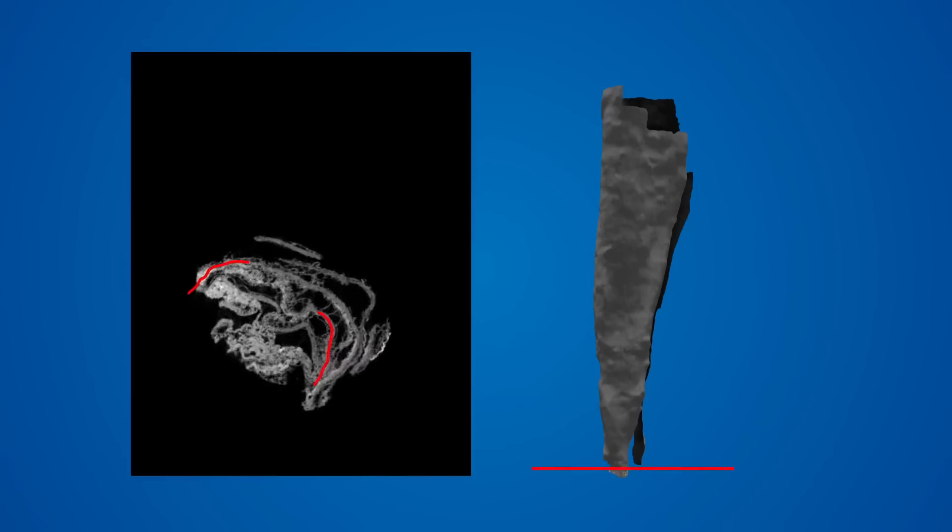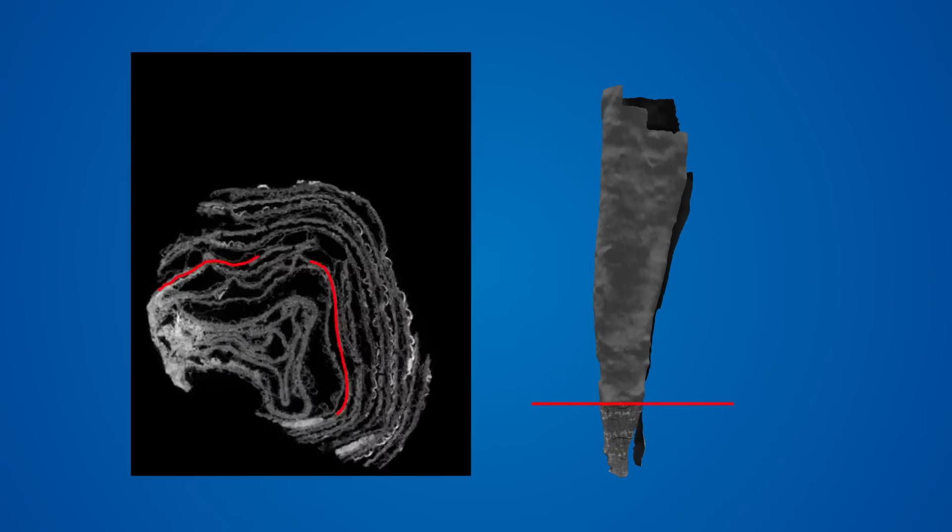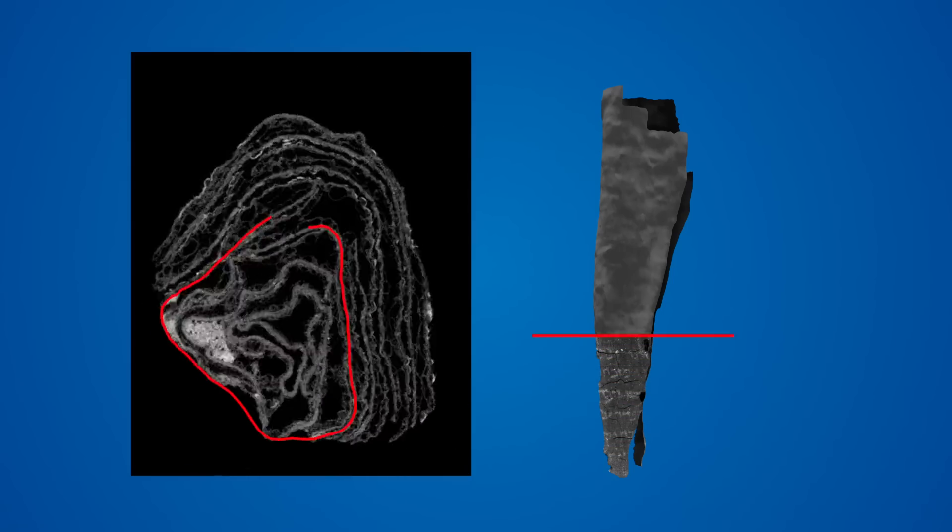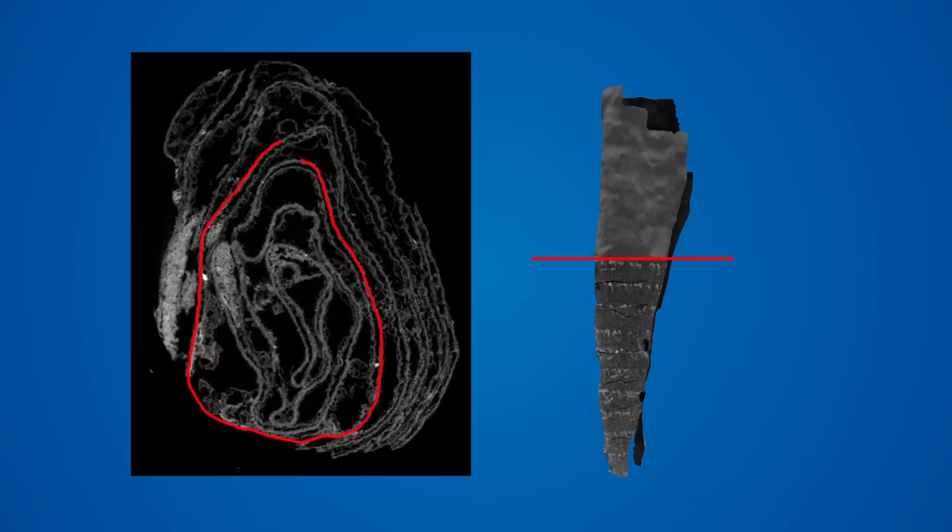Next, we extract the ink from the data in a process called texturing. Using the 3D shape generated by segmentation, our software makes another pass through the scroll.